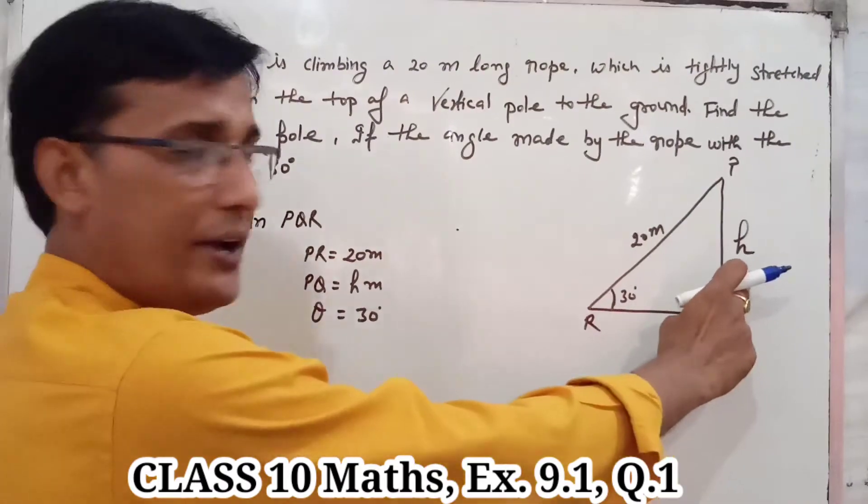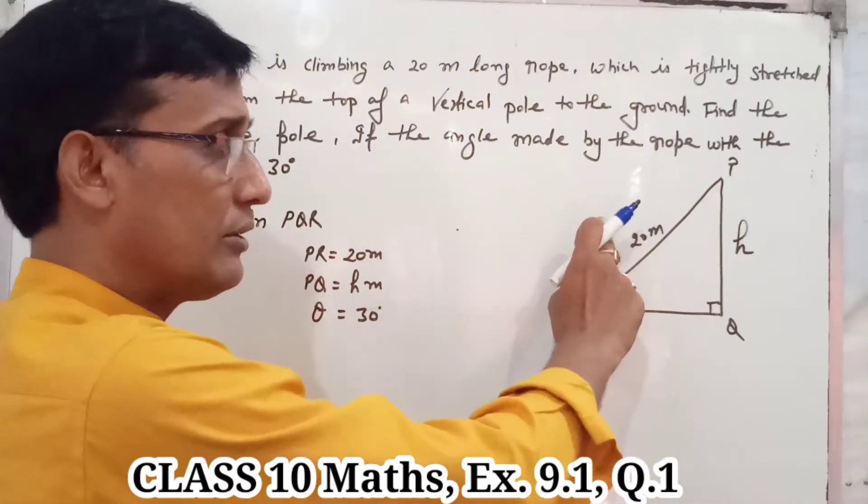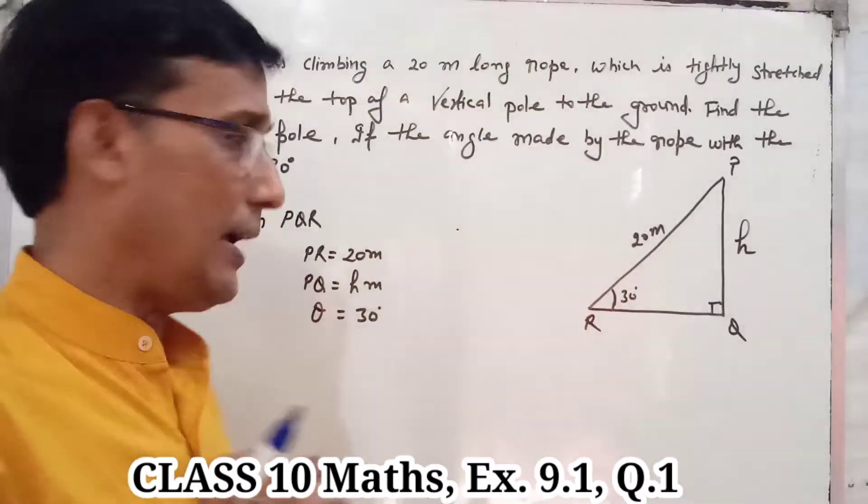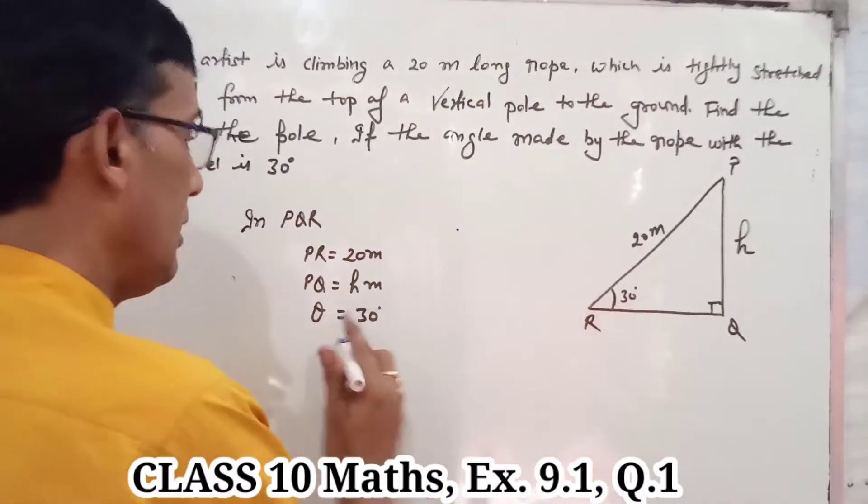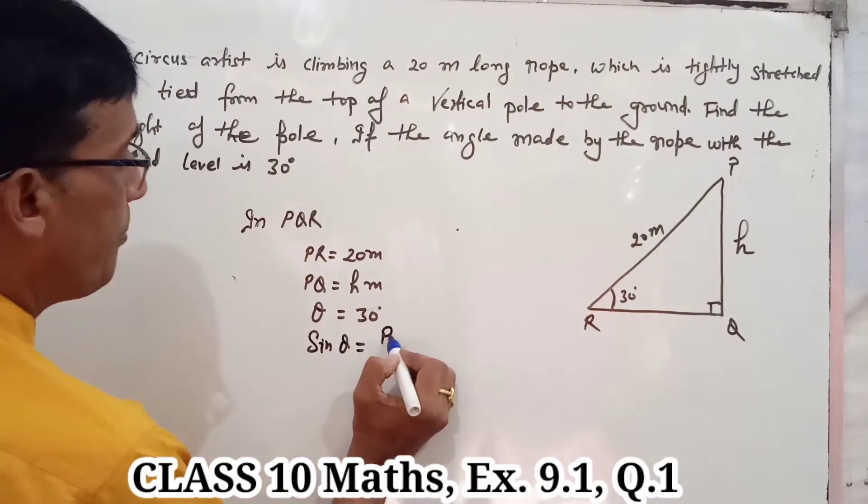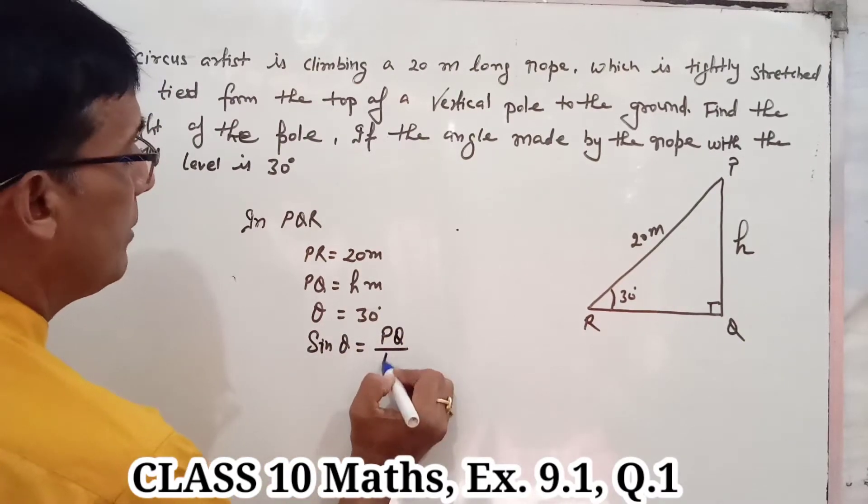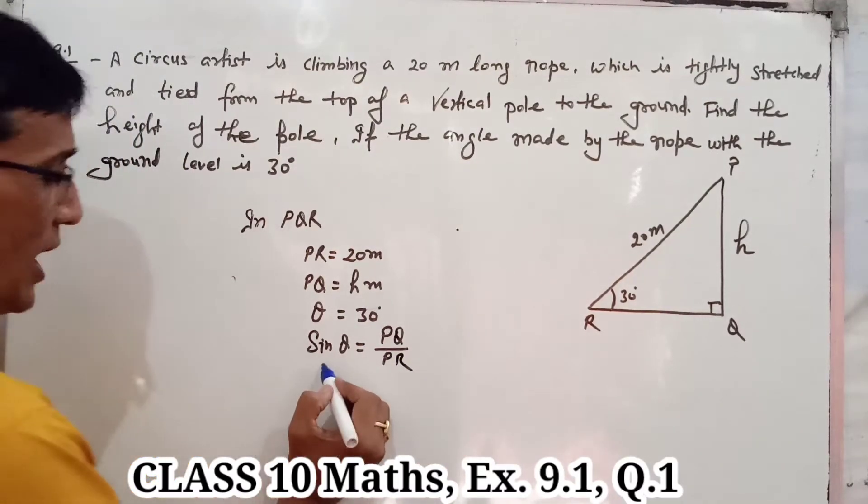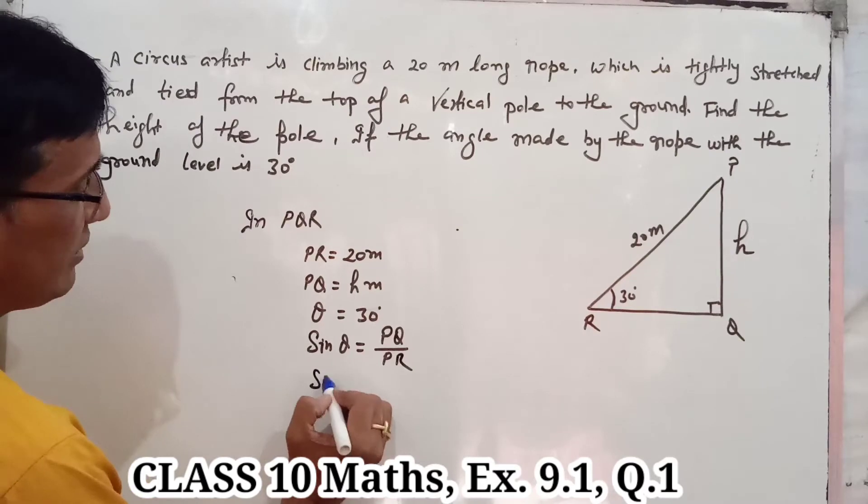Here is perpendicular and here is hypotenuse. So perpendicular upon hypotenuse, sin theta is equal to PQ upon PR. Now PQ is what? Here sin theta is sin 30 degrees.